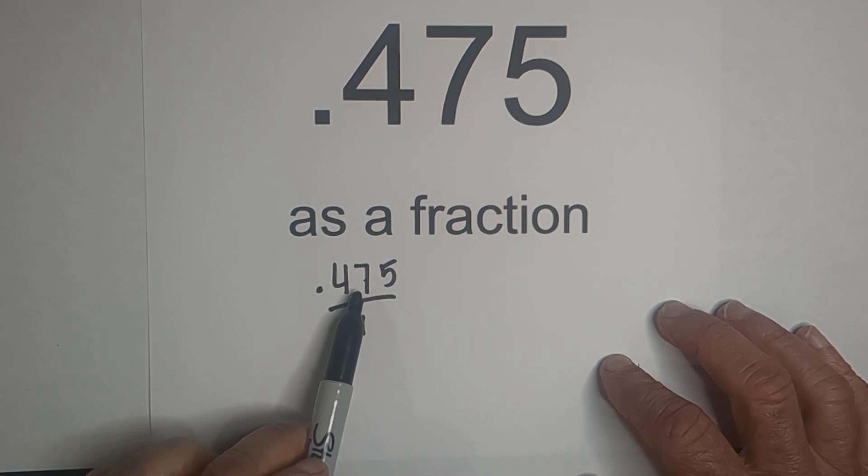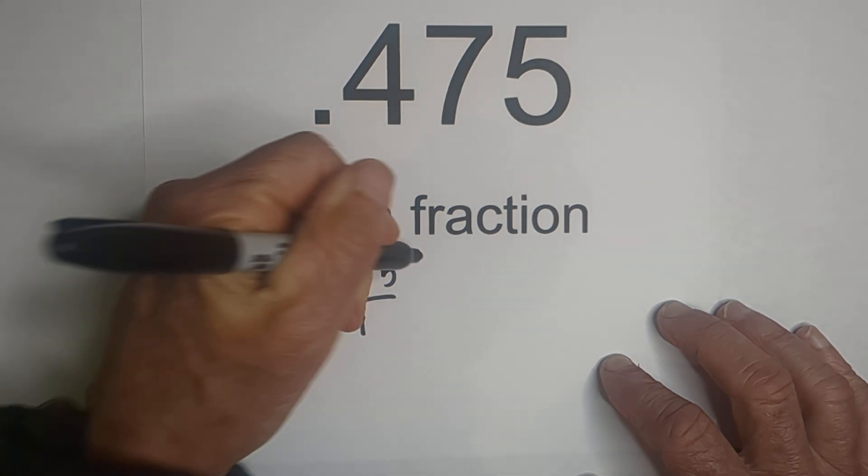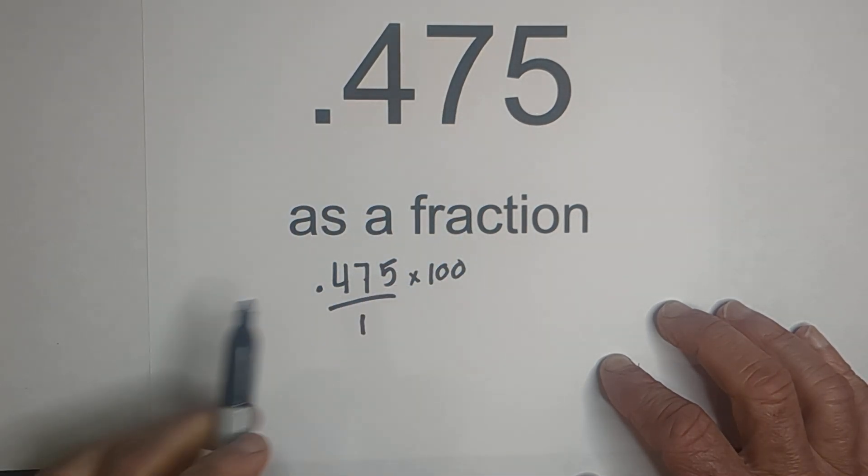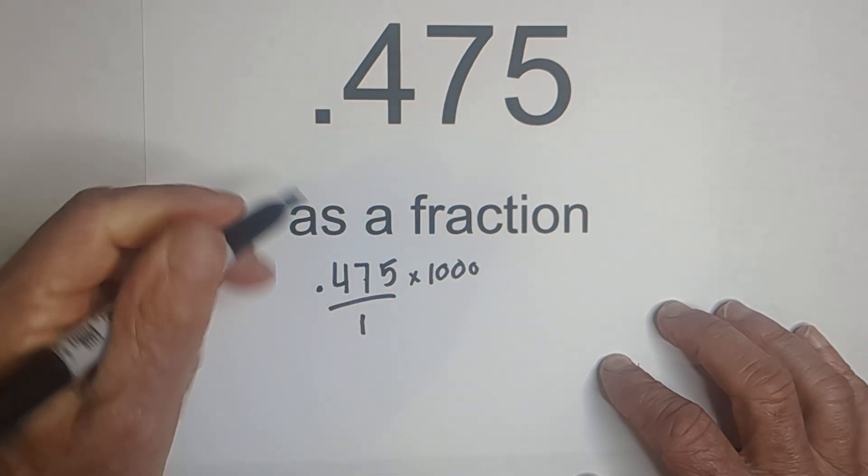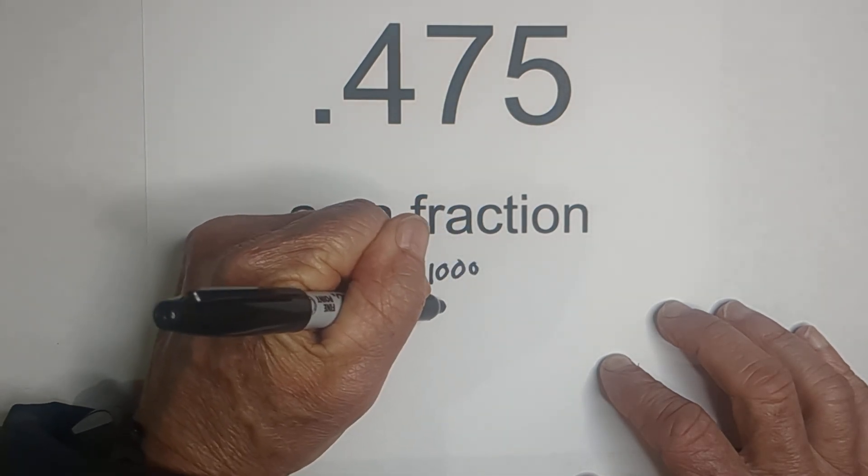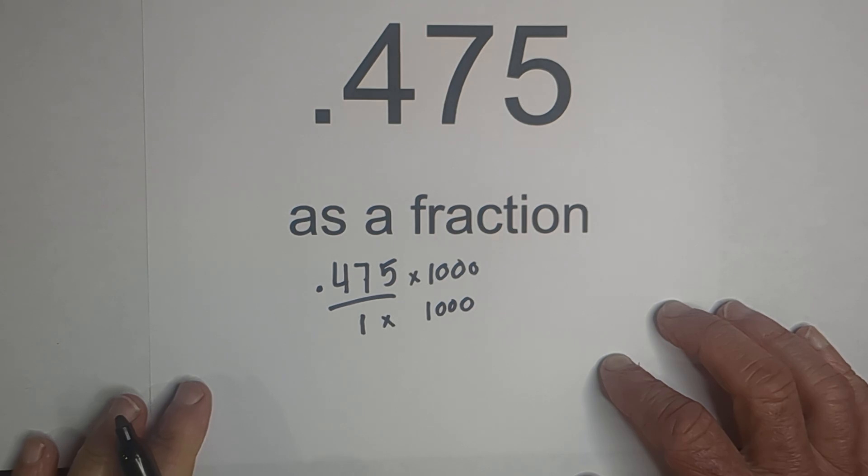So I need to move it 1, 2, 3 times. So I can multiply 475 thousandths times 1,000 and what I do to the numerator, I need to do to the denominator.